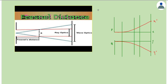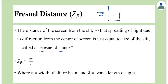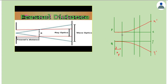So we call the distance between the slit and the screen as Z subscript F — the Fresnel distance. This is the distance for which ray optics is valid. It can also be defined as the distance of the screen from the slit for which the spreading of light due to diffraction from the center of the screen is just equal to the size of the slit. This is called the Fresnel distance.